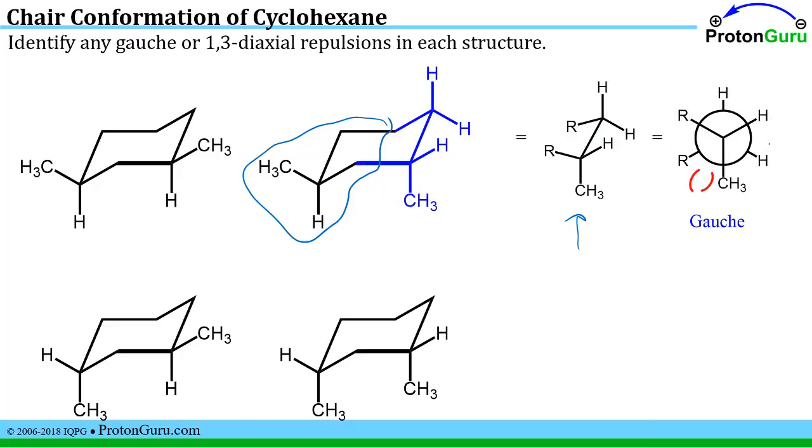In the Newman projection then it's pretty easy to see the gauche interaction. The gauche remember is when you have a methyl or some group that's not hydrogen bumping into another group that's not hydrogen. They're not eclipsing yet but they're right beside each other in a staggered conformation. That's the definition of a gauche interaction.